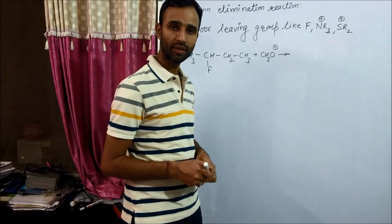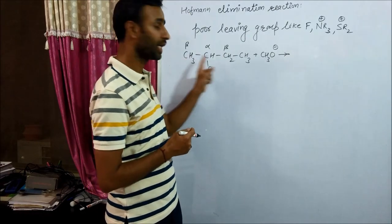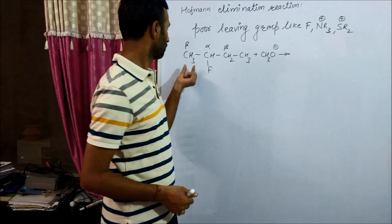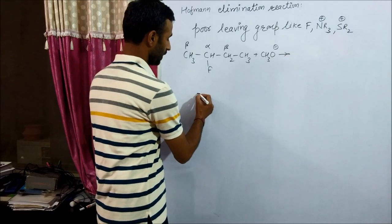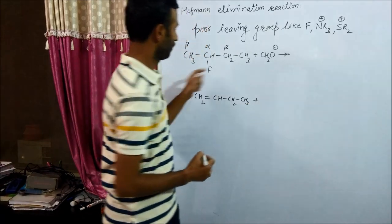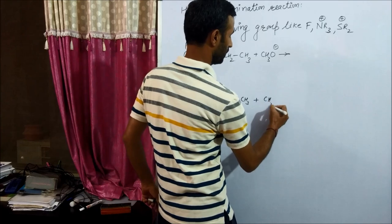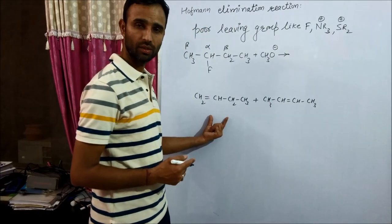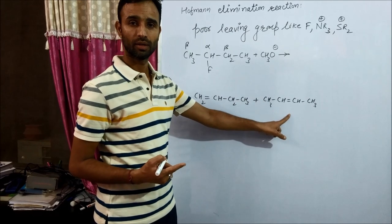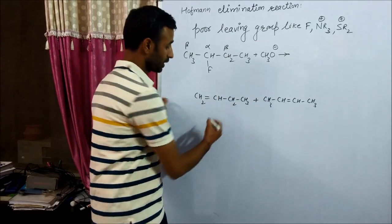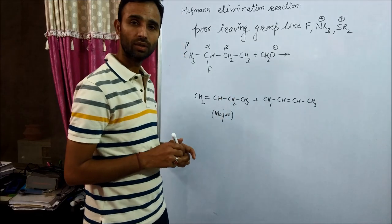We get two products because it has two types of beta hydrogens. If we remove the beta hydrogen from the left side we get one product (but-1-ene), and if we remove from the right side the product formed is but-2-ene. This first product is the Hofmann product and the second is the Zaitsev product. The Hofmann product is the major product.